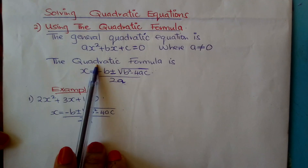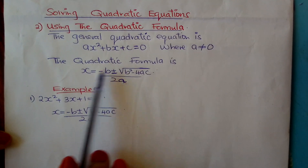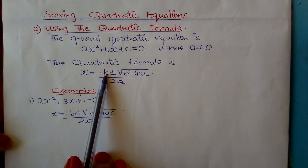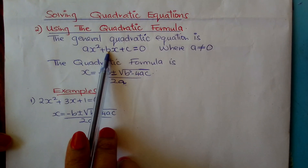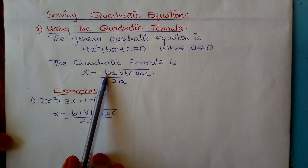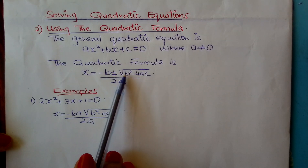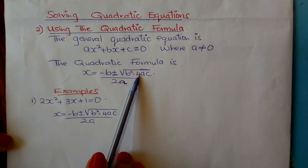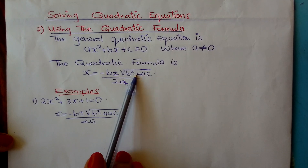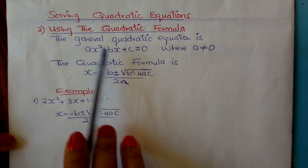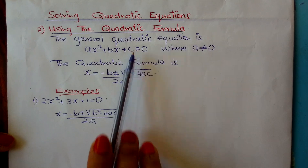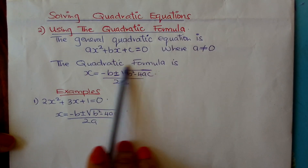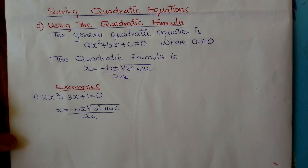The quadratic formula is x equals minus b, plus or minus the square root of b squared minus 4 times a times c, all divided by 2a. This is a formula that you should keep in mind.